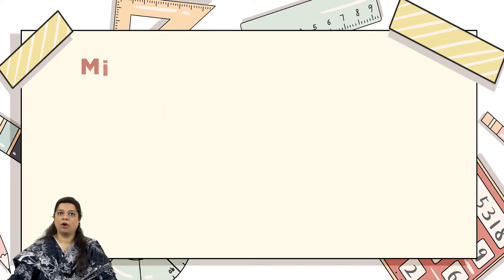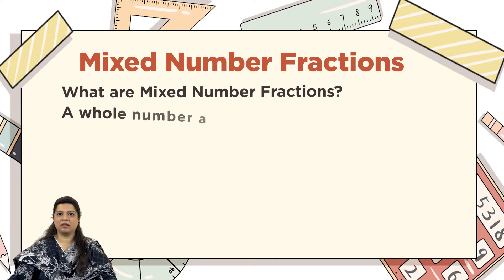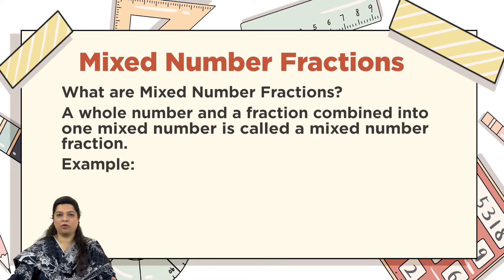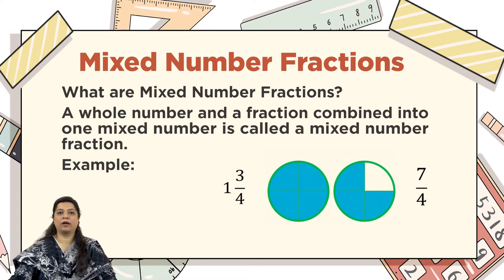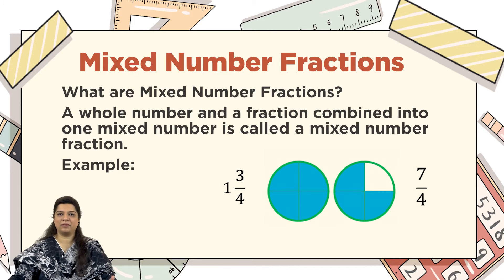What is a mixed number? A mixed number is a combination of a whole number and a fraction part combined together. The example in front of you is 1 whole number 3 upon 4. The 1 is the whole number, which can be represented as a fully colored picture, and 3 upon 4 can be represented as 3 parts colored out of 4.